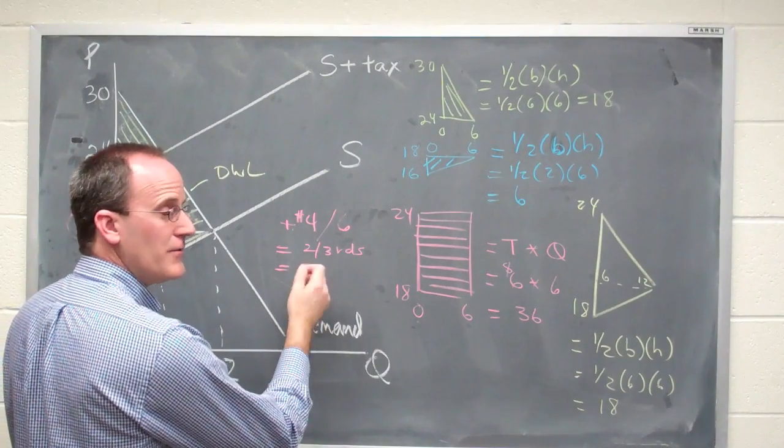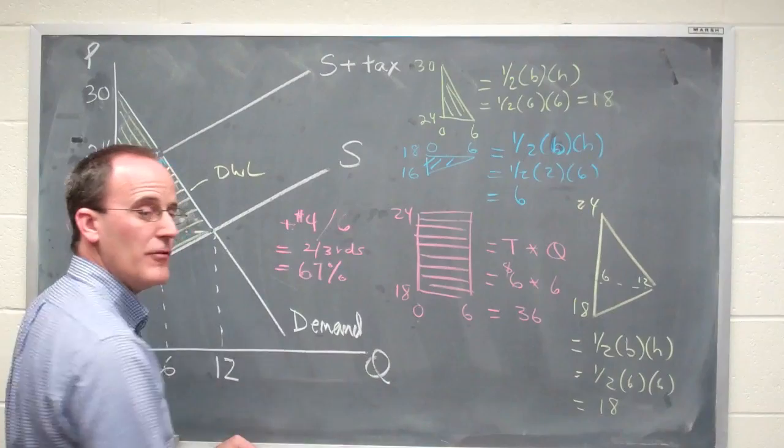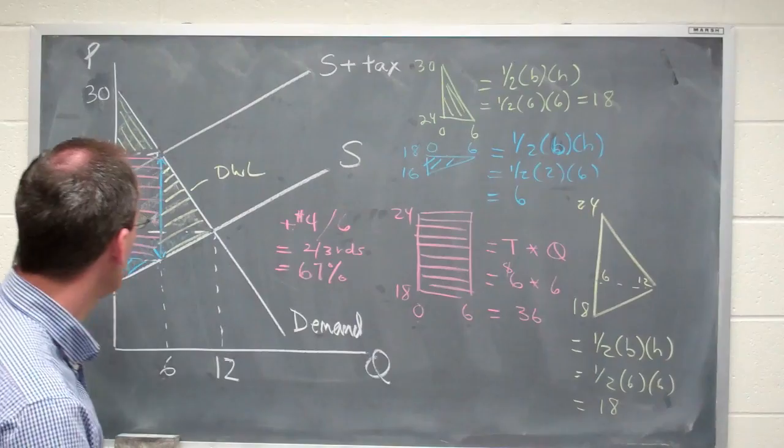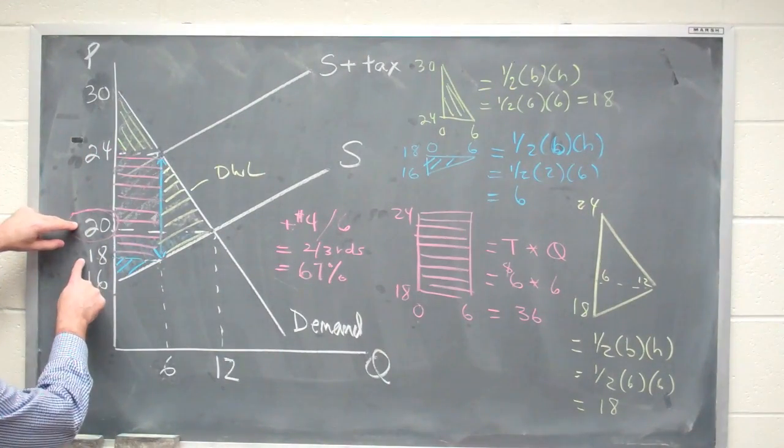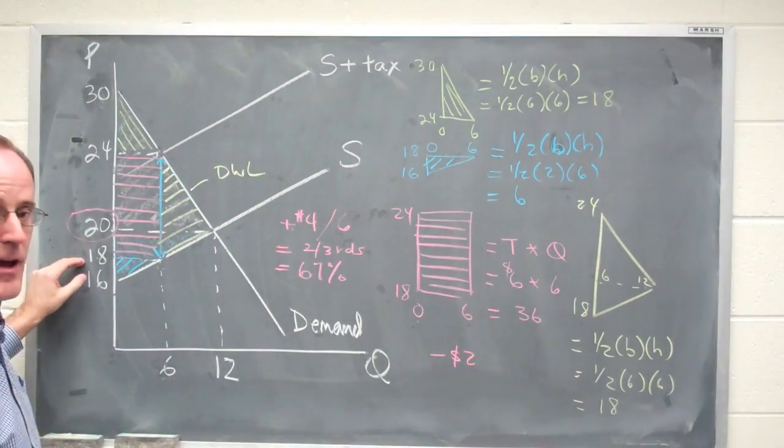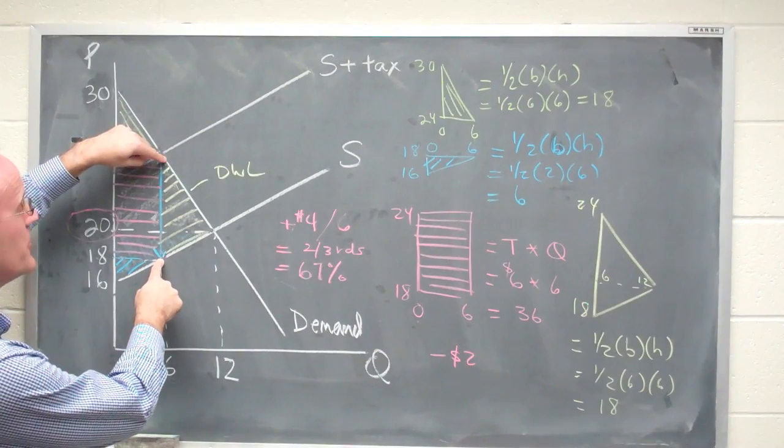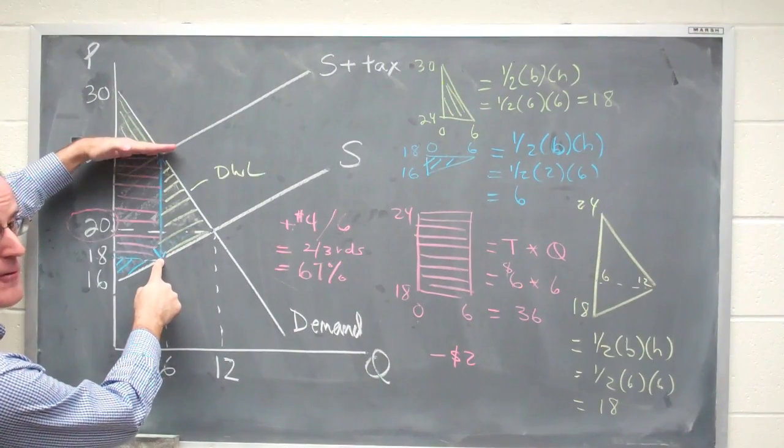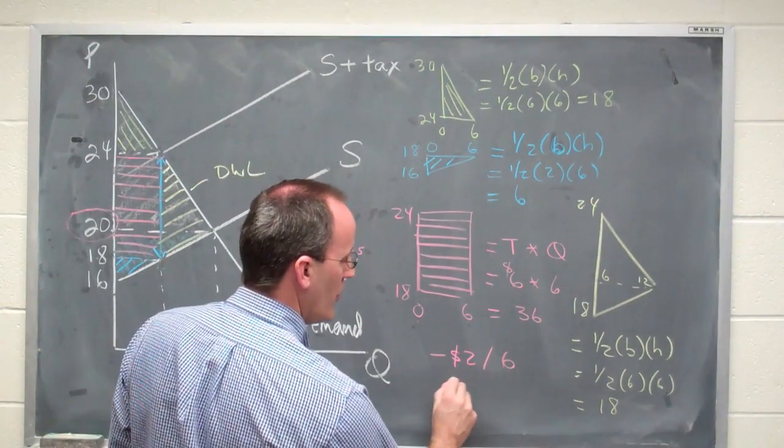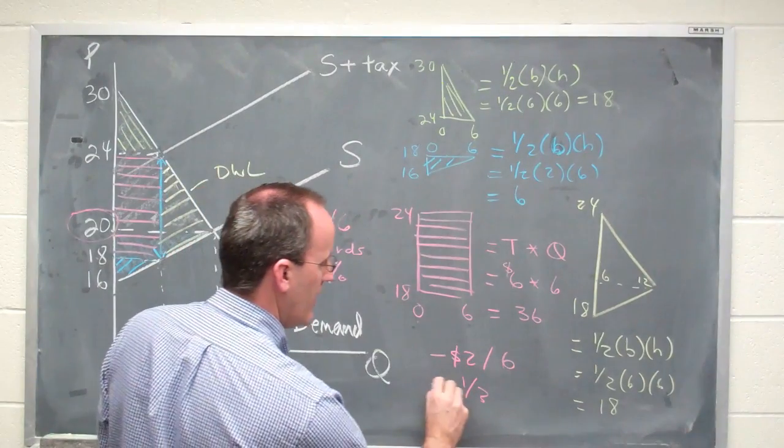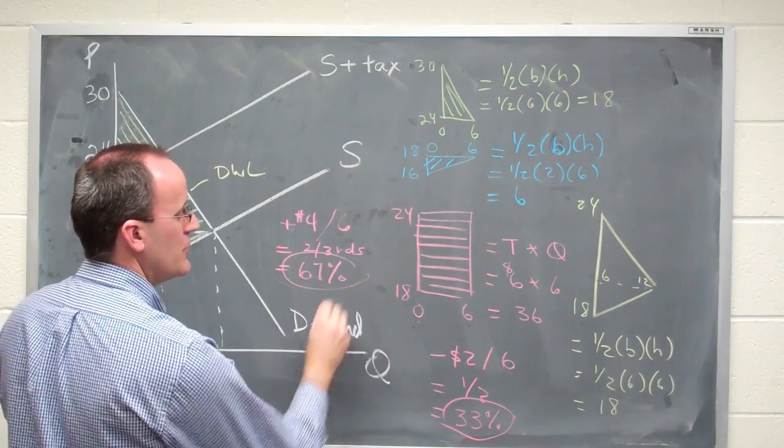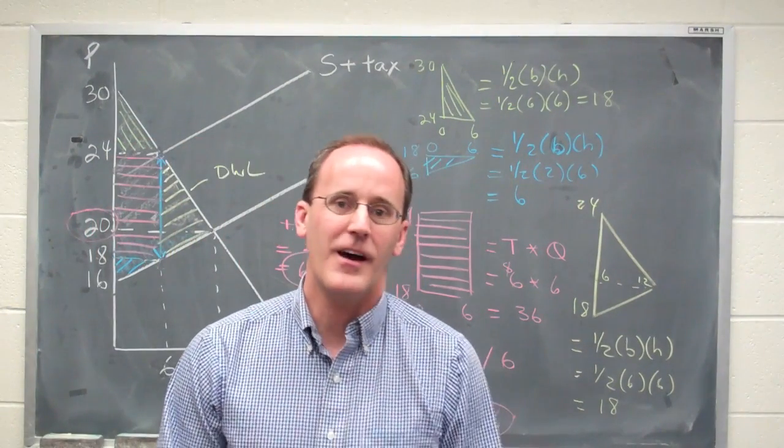So the tax incidence, as far as the consumer is concerned, is they're paying about 67% of the tax. Now, of course, we want to be able to add this up to 100%. This will help us figure out what the producer is paying. Before, the producer received $20, but now they only net 18. So if I'm the producer, then I'm down $2 from what I had before. The tax is $6. I'm responsible for sending that on to the government. I was able to get the consumer to pay $4 out of the $6, but I had to eat the other $2 out of the $6. So what happens here is that's a one-third. Therefore, the producer incidence is 33% and the consumer's incidence is 67%. I hope that's been helpful.